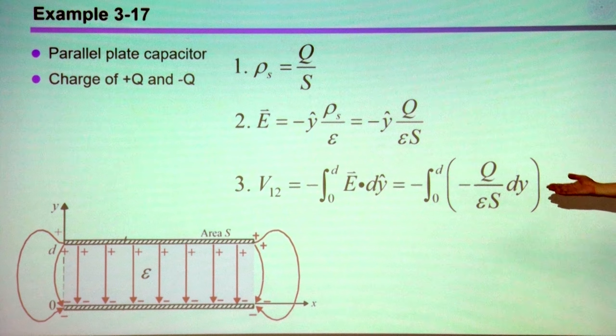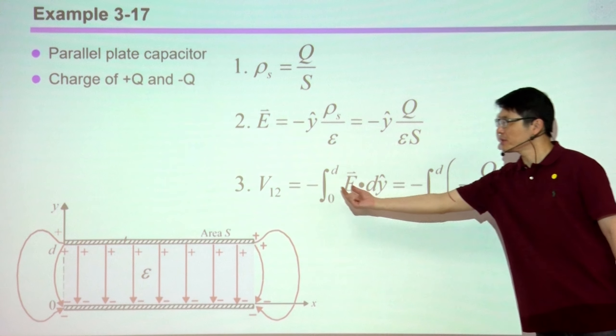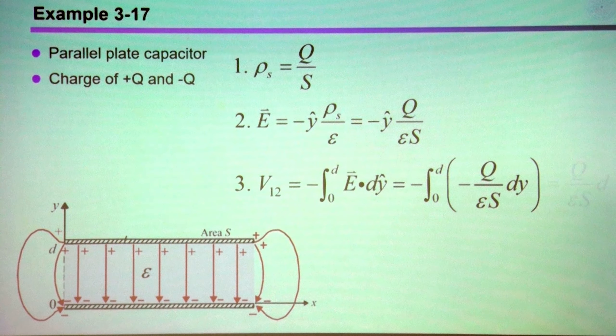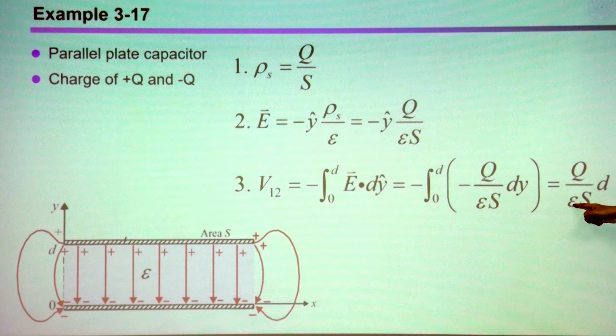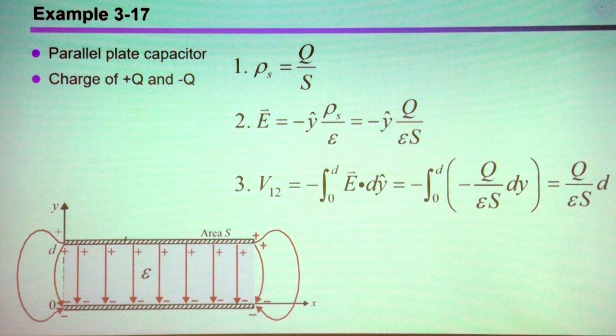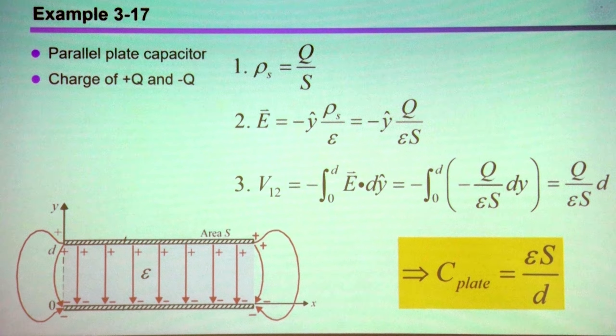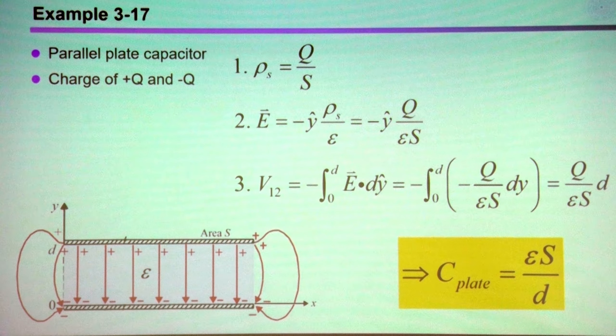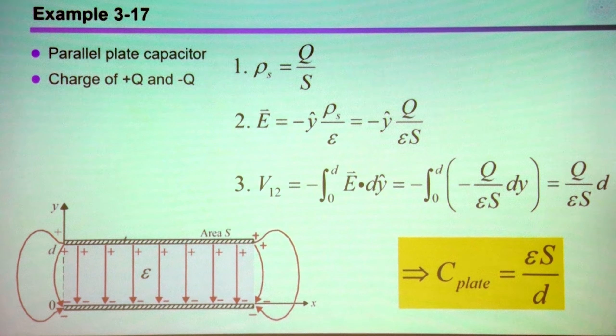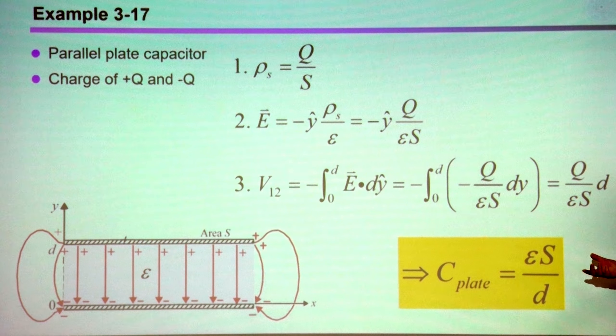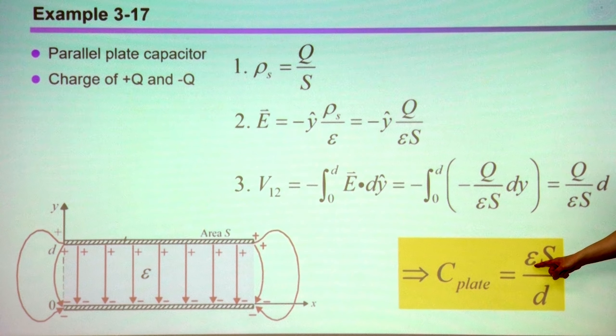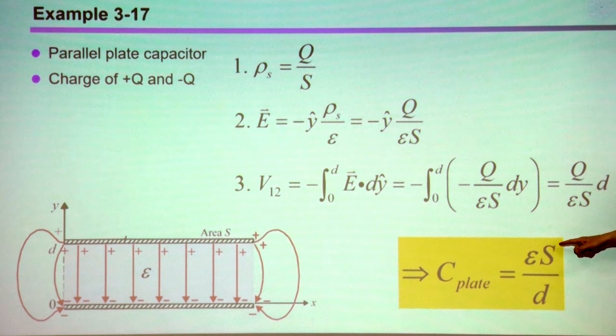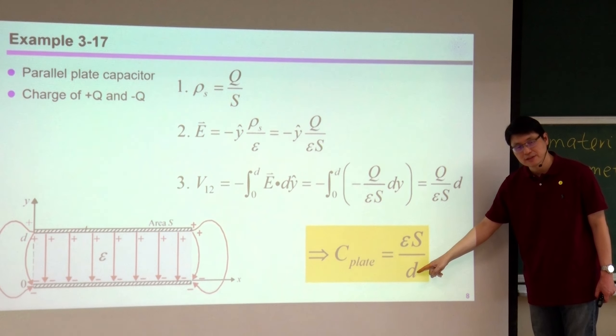Once we know the E field intensity, all we have to do is perform line integration, and remember this negative sign. The potential difference between the bottom plate and the top plate is Q times d divided by ε and divided by the surface area. This is something we learned already. I bet each and every one of us learned this or memorized these results starting from high school. If you have metallic parallel plates, the capacitance is determined by the dielectric material you use, and the surface area, and its separation.